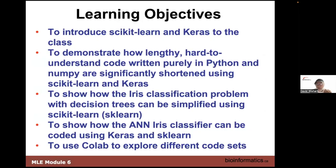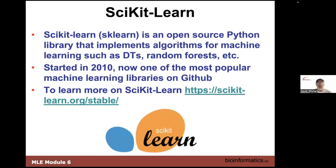We're introducing scikit-learn and Keras. The reason we're doing this is to show how the code we spent so much time explaining — written in pure Python and NumPy — is much easier, much shorter, and in some cases even better when written using scikit-learn and Keras. We'll show specific examples: we'll take the iris classification problem done with decision trees written in NumPy and Python, and show how easy it is with scikit-learn. Then we'll do the same with the neural net iris classifier.